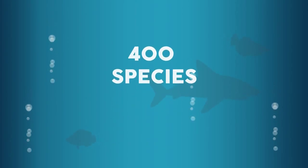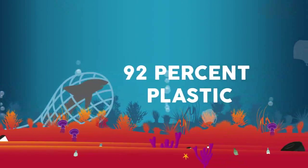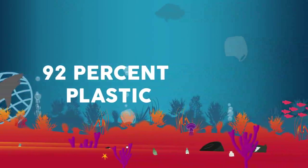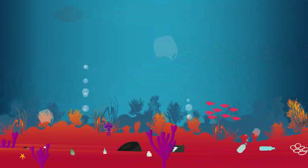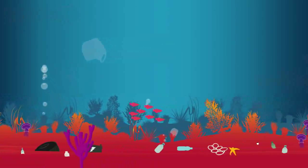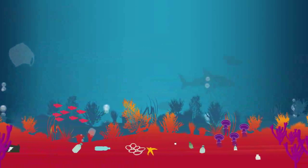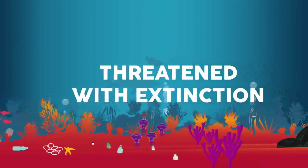That's almost 400 different species that have ingested or become entangled in marine debris. In 92 percent of cases, plastics are the culprit. Our trash hurts the most vulnerable too—more than one in ten species that have fallen victim to marine debris are threatened with extinction.